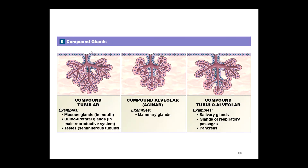Compared to compound: compound means the ductwork is branching. Look at the gray cells — you can see them coming in and then branching, branching, branching. That would be compound. Same thing here: the duct comes in and it branches. All of these are ductal cells.